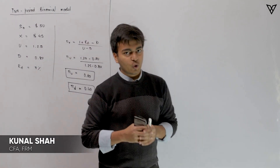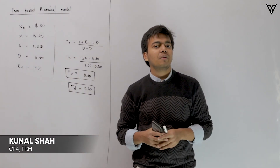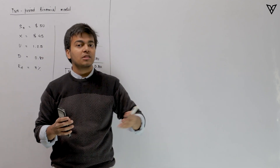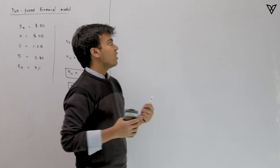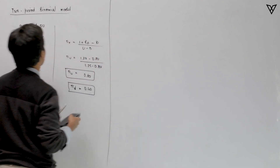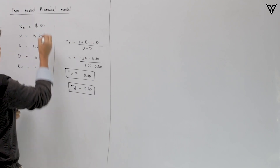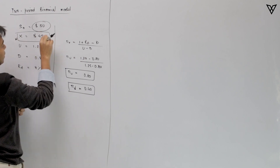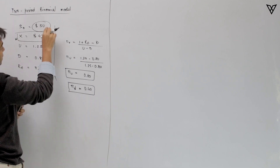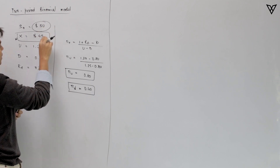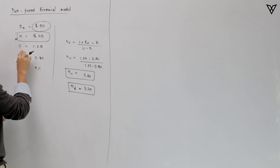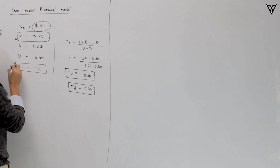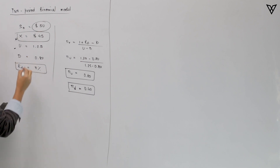In this video we'll be talking about European options, but the time frame we'll be taking here is 2 years. We'll be talking about 2-year European call options and how to calculate their value. The current stock price is $50, the exercise price is $45 — note the exercise price is on the lower side this time. The up factor is 1.25, the down factor is 0.8, and the risk-free rate is 7%.